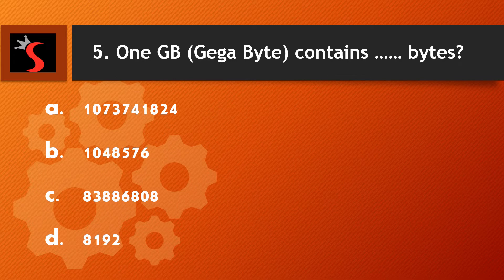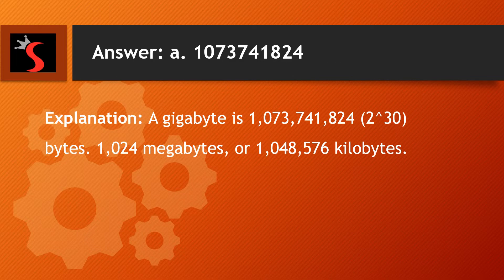The fifth question is: 1 GB contains how many bytes? A. 1,073,741,824. B. 1,048,576. C. 8,388,608. Or D. 8,192. The right answer is 1,073,741,824. Explanation: a gigabyte is 1,073,741,824 bytes, 1024 megabytes, or 1,048,576 kilobytes.